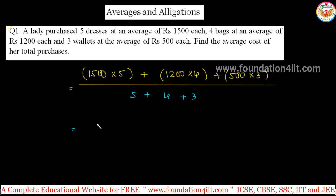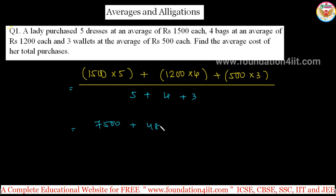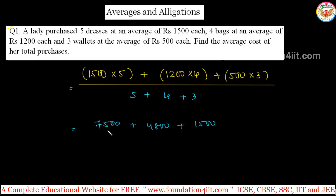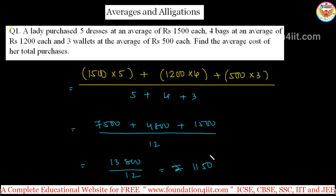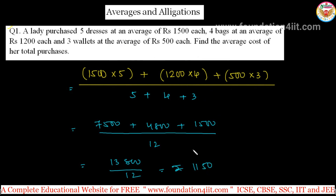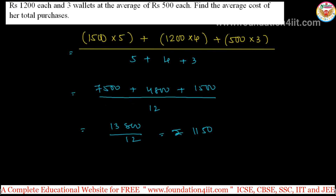Calculating: 1500 × 5 = 7500, 1200 × 4 = 4800, 500 × 3 = 1500. Total = 13,800 divided by 12. The overall average is 1150 rupees per item. So the average cost across dresses, wallets, and bags is 1150. This is a direct question.